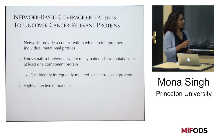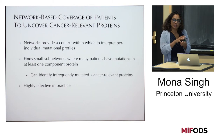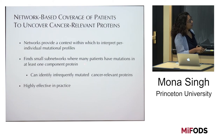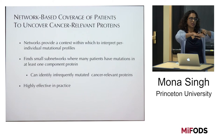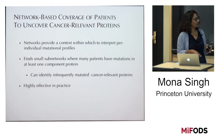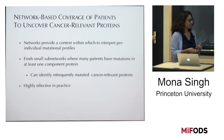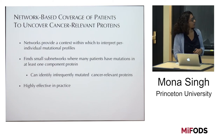To summarize this part: networks provide a context within which to interpret per-individual mutational profiles. We try to find small subnetworks where many patients have mutations in at least one component. We don't require all proteins to be heavily mutated individually; because we're looking at subregions within the network, we take advantage of the structure where interacting proteins tend to participate in the same process. This allows us to identify infrequently mutated cancer-relevant proteins as well, and it's highly effective in practice.